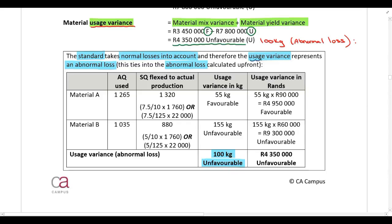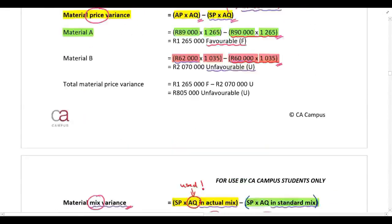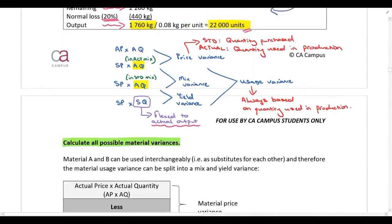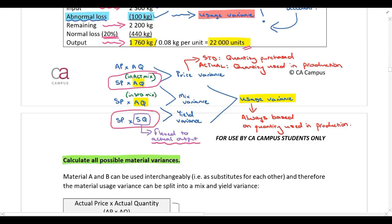So how do we calculate the usage variance? Go back to the framework we wrote down up front. Your usage variance is the difference between the standard price multiplied by the actual quantity in the actual mix, and the standard price multiplied by the standard quantity flexed to actual output. The difference between those two gives you your usage variance.